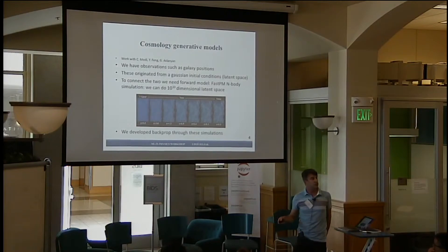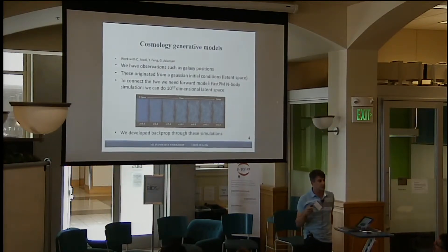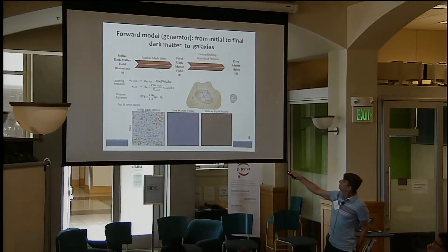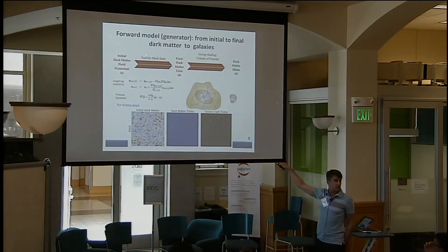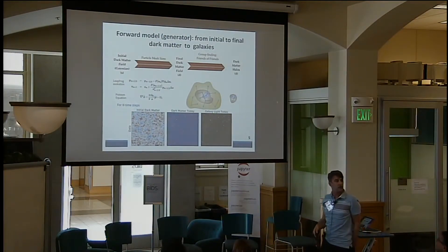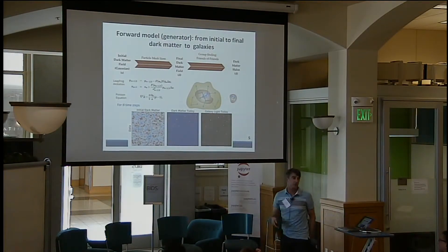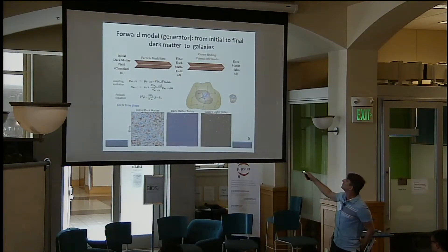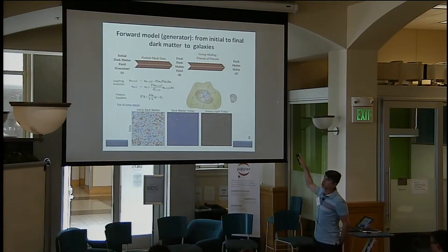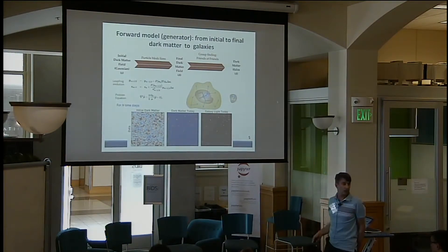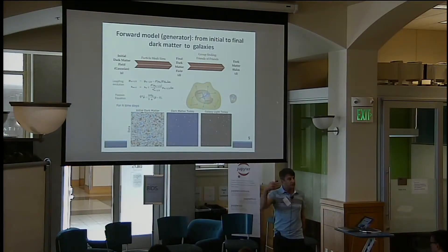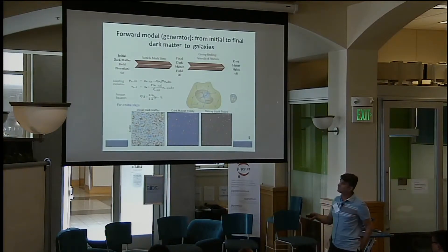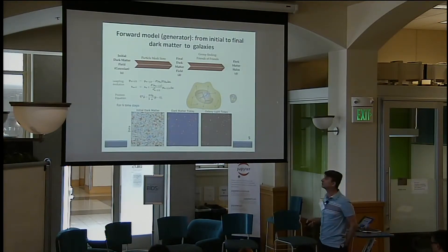We have backpropagation through this simulation, so we can have a gradient with respect to initial conditions. The forward model in cosmology is basically: start with an initial Gaussian field, pass it through the N-body simulation to get dark matter, then pass it again through some nonlinear process called galaxy formation — mostly a black box to get galaxies. Think of this process as being non-differentiable. In our work, we replace it with some differentiable operation — first a neural network approach, then something else.